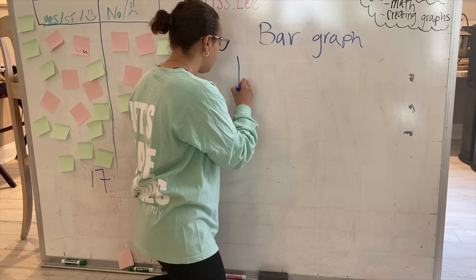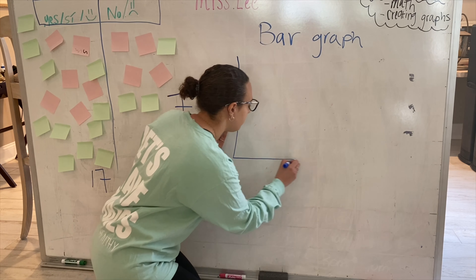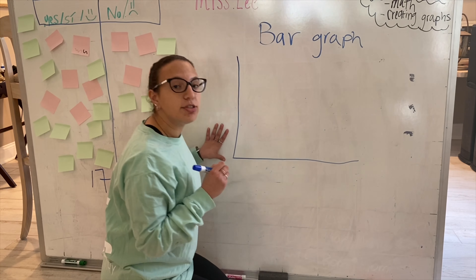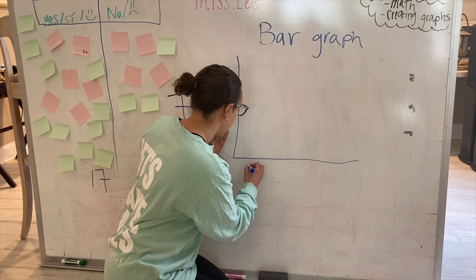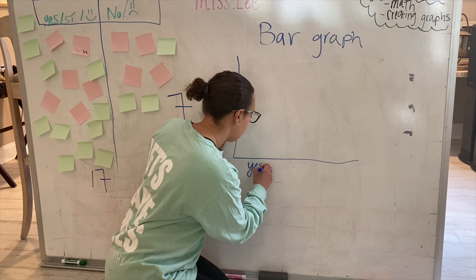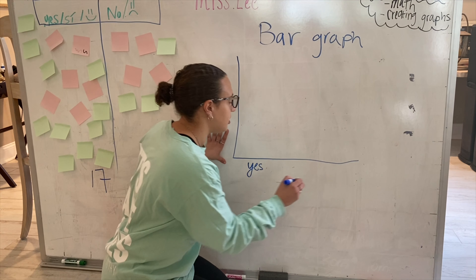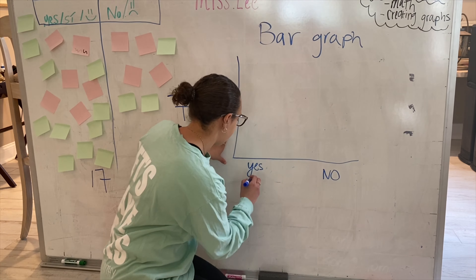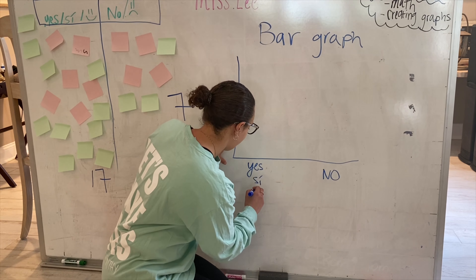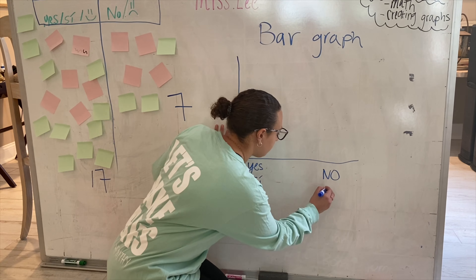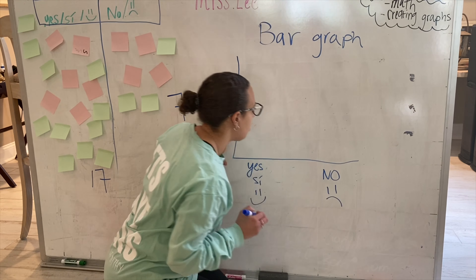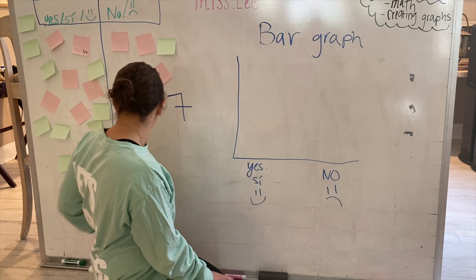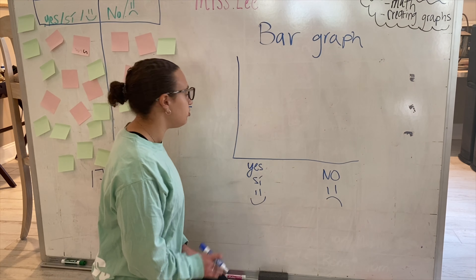So let's make this graph. We want to have one bar of students that do like the food, and another bar of students that do not like the food. How many students liked the food? Well, let's look back — seventeen students.